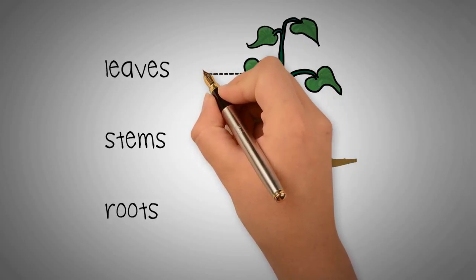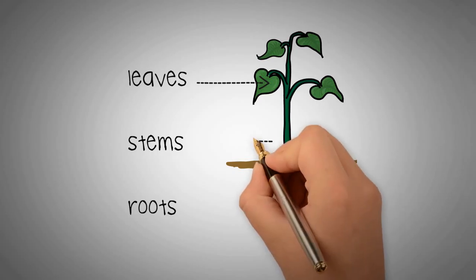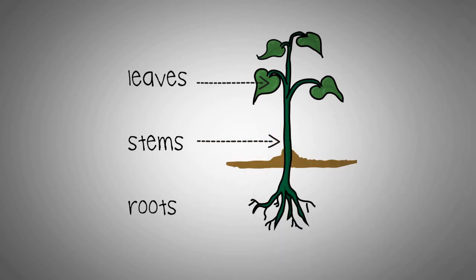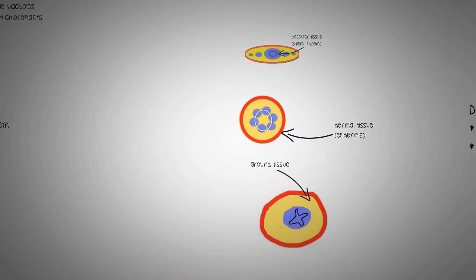The main function of a leaf is photosynthesis. The stem transports materials throughout the plant and gives it support, and the roots anchor the plant in the ground and allow it to absorb water.